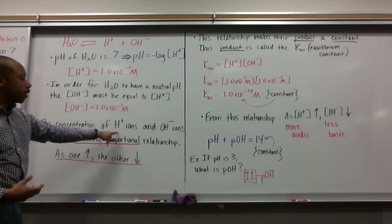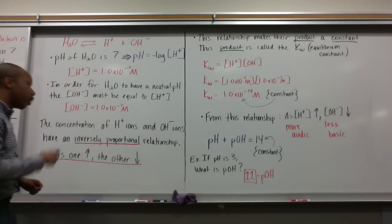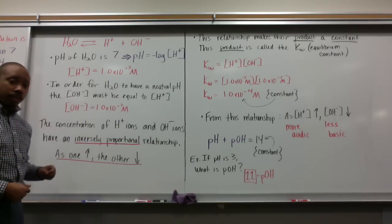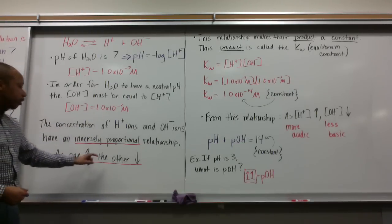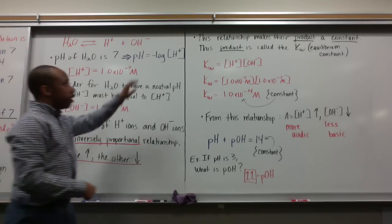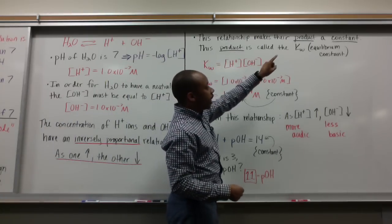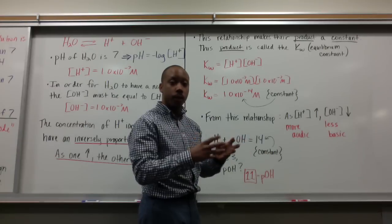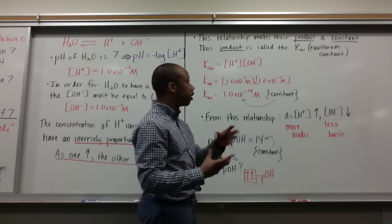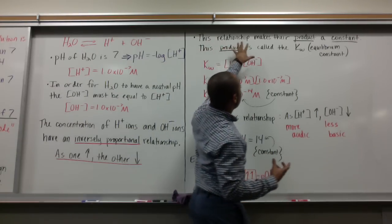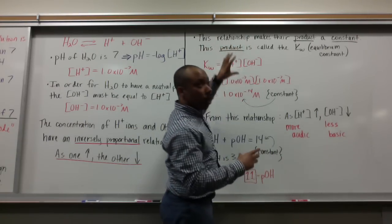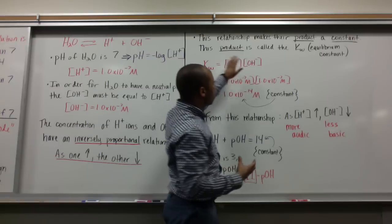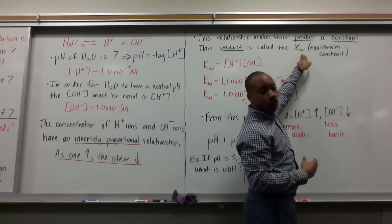The concentration of H plus ions and OH minus ions have an inversely proportional relationship - as one increases, the other decreases. This relationship makes their product a constant, just like with kinetic and potential energy. The product of the concentration of H plus ions and OH minus ions is a constant called K sub W, also called the equilibrium constant.